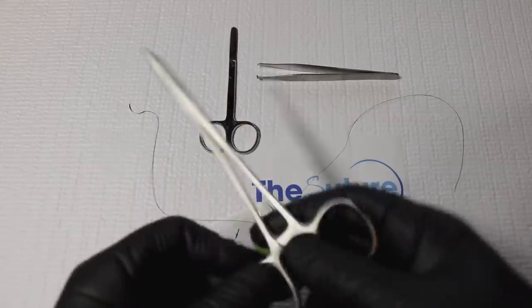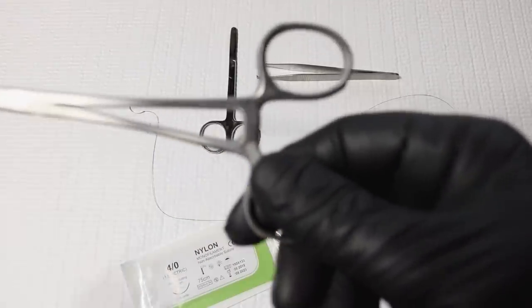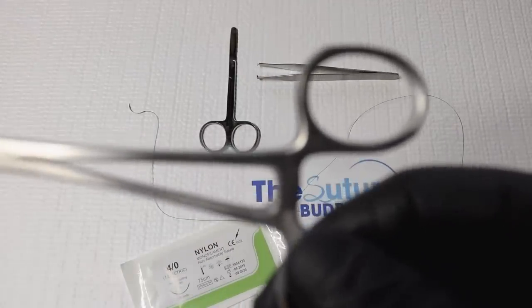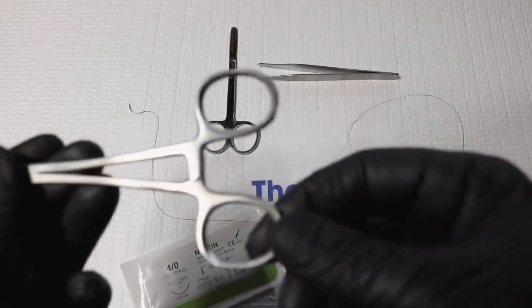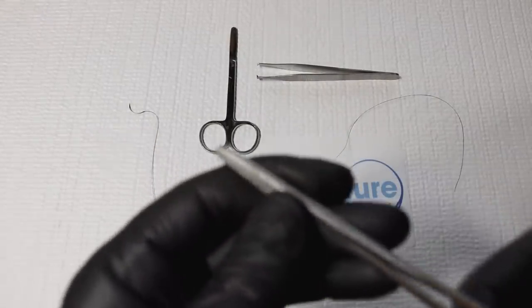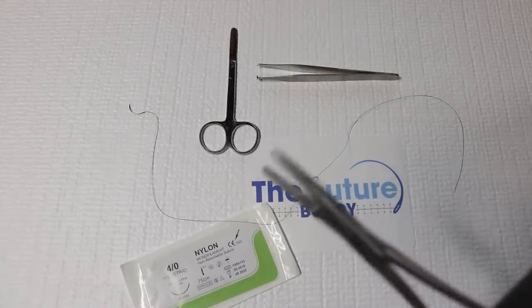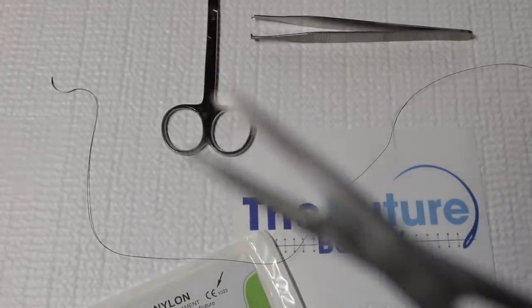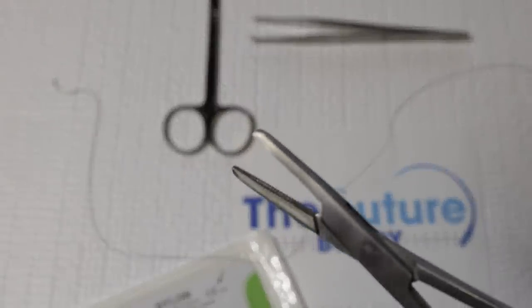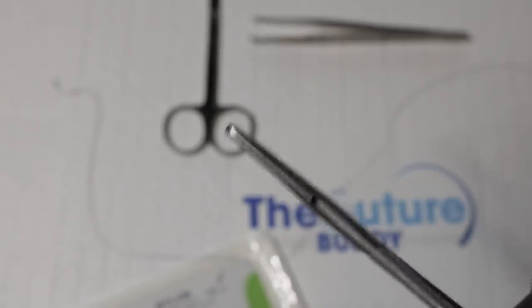this guy right here, our needle holder. You're gonna see here the clasps. It has two rings for your fingers, and one of the most important things about these is the serrated grasp. If you see that, that's to help grab the suture better and have a better grip on it.